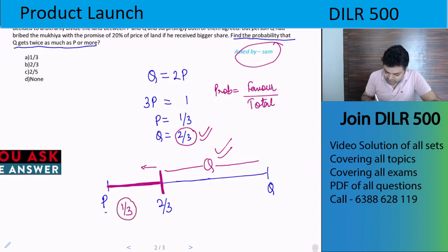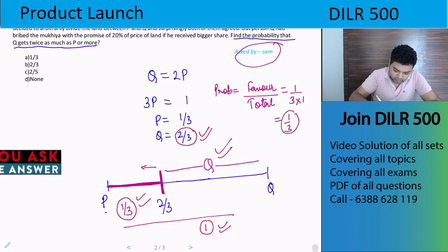So what is the distance of this line segment? This is 1/3 of the length. And total distance is 1. Favorable is 1/3, total is 1, so probability is 1/3 times 1, that is 1/3. So the probability that Q gets twice as much as P or more is 1/3.